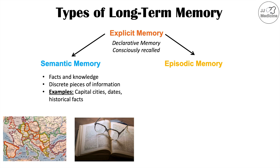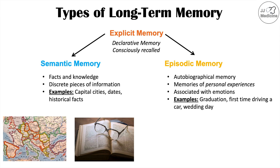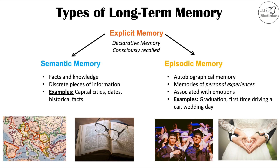Episodic memory is autobiographical memory — memories of personal experiences associated with emotions. It's often the story of your life, and each memory has associated emotions. Examples include graduation, the first time driving a car, and your wedding day. These differ from semantic memory, and each uses different systems in the brain. Another key difference: with episodic memory, you can often remember the date and time of experiences, whereas you typically cannot recall when you learned a factual piece of information like a country's capital.